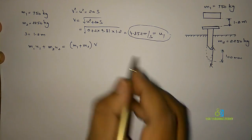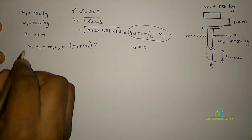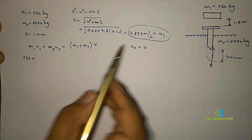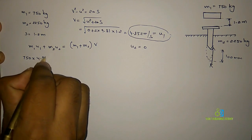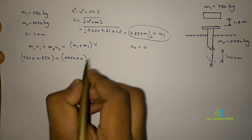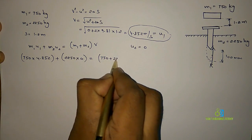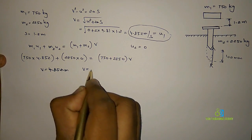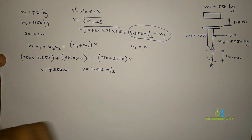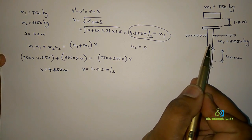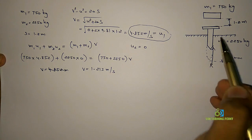Initially the pile is at rest, so its initial velocity U2 = 0. Substituting into the momentum equation: 750 × 4.852 + 2250 × 0 = (750 + 2250) × V. Simplifying, we get V = 1.213 m/s. So with this velocity the hammer-pile system impacts and penetrates into the ground.